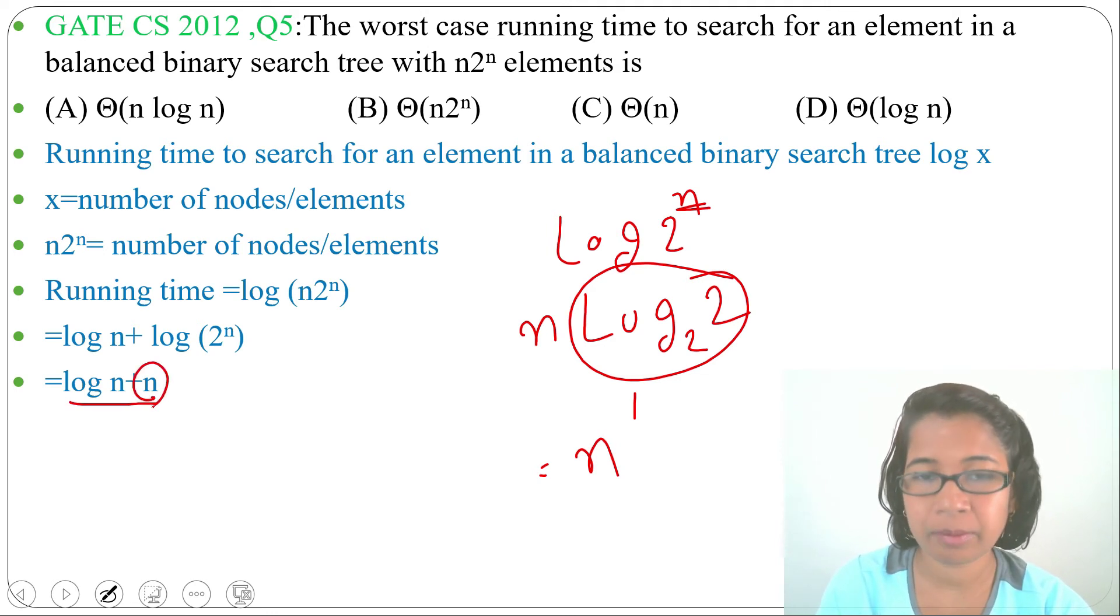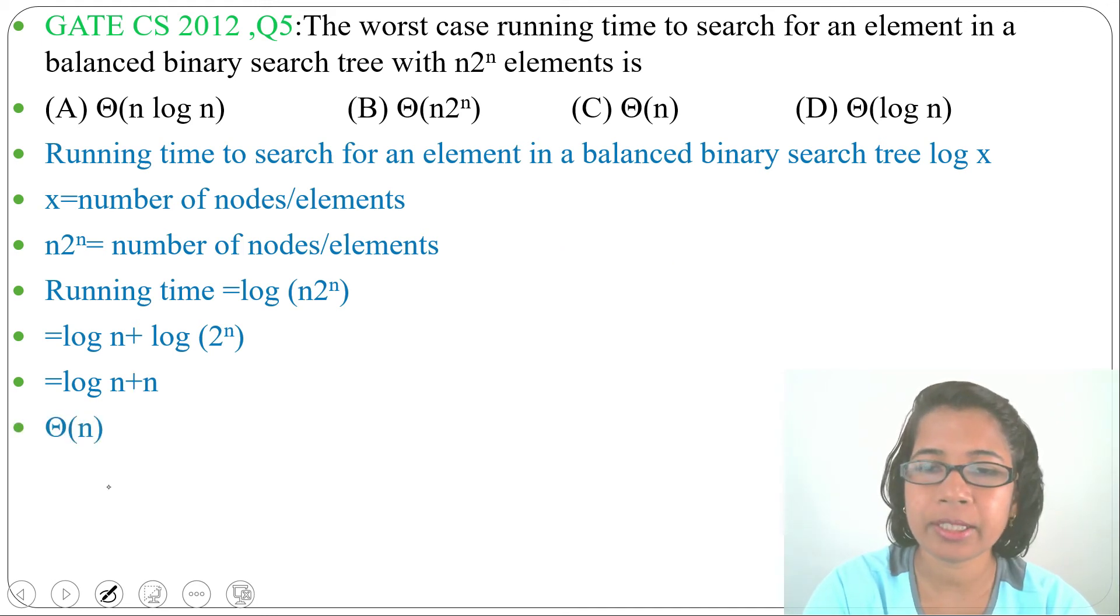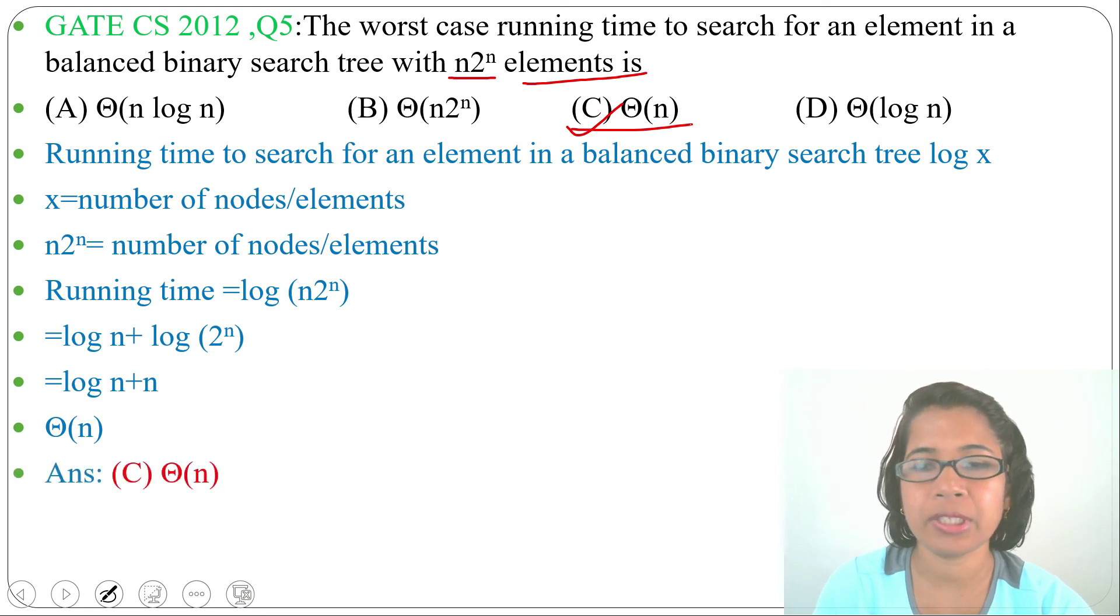So running time will be Θ(n). Now check in which option it is present. It is present in option C, Θ(n). So worst case running time to search for an element in a balanced binary search tree with n×2^n elements is Θ(n). Answer is option C.